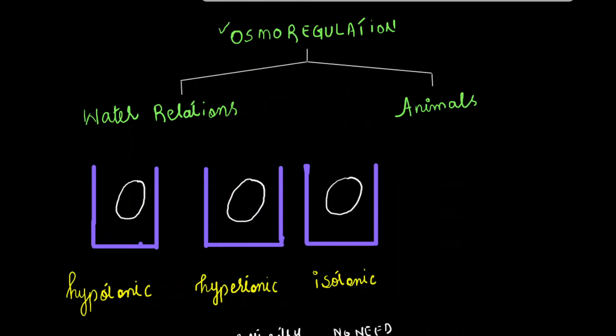Before studying osmoregulation, let's discuss water relations. In what type of environment do we need osmoregulation, and in which environment do we not need osmoregulation. Water potential is represented by a symbol called Si, spelled Psi with P silent. Si W means water potential.